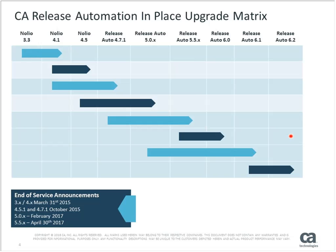What you're looking at here includes the end-of-service announcements in the bottom left-hand corner. If you're an existing Release Automation customer, you can see where we are planning to drop end-of-service for each release. The four versions were dropped in October. Next year in February the 5.0s are dropped, and then 5.5 in April. End of service means we don't create fixes anymore — support will expect you to upgrade.